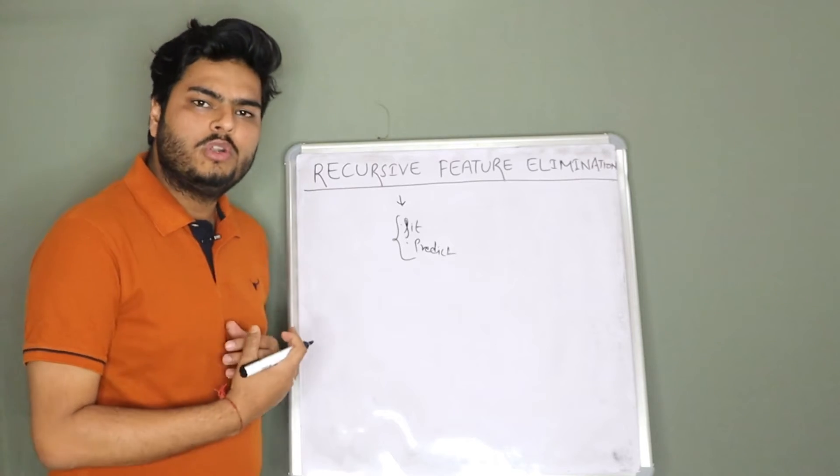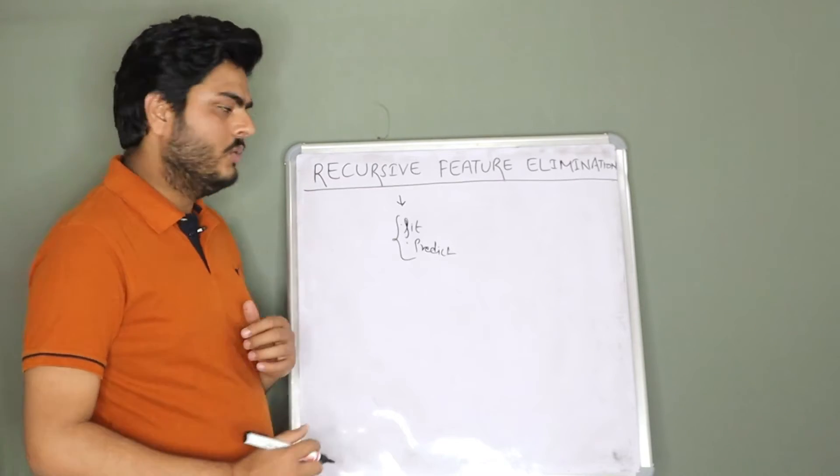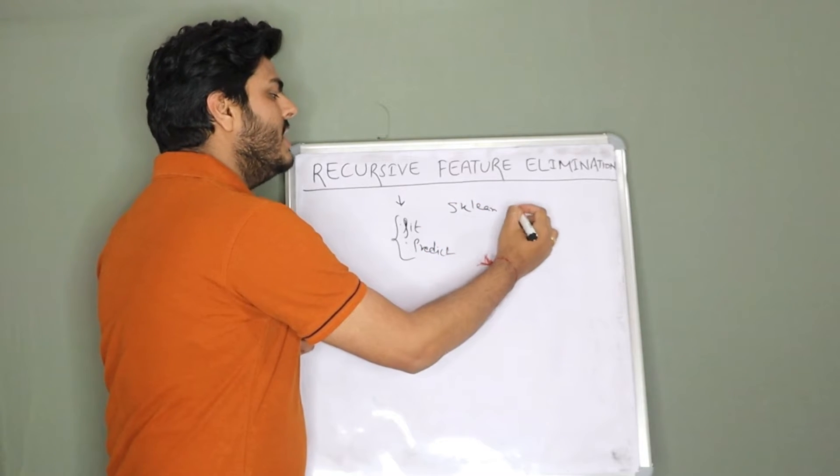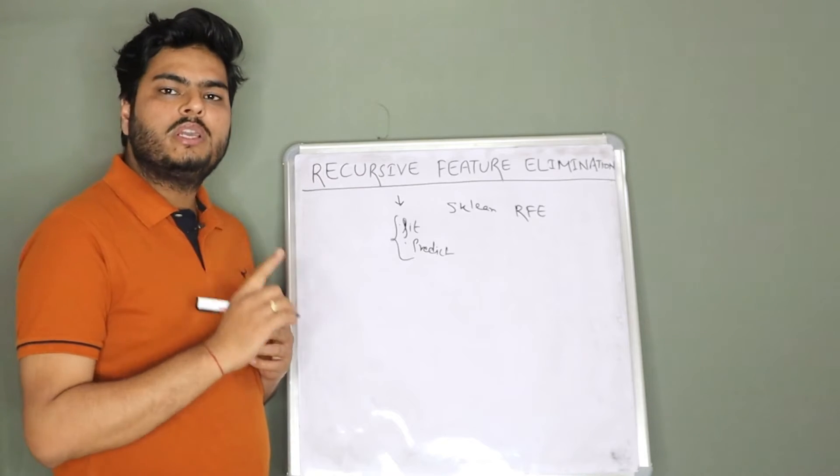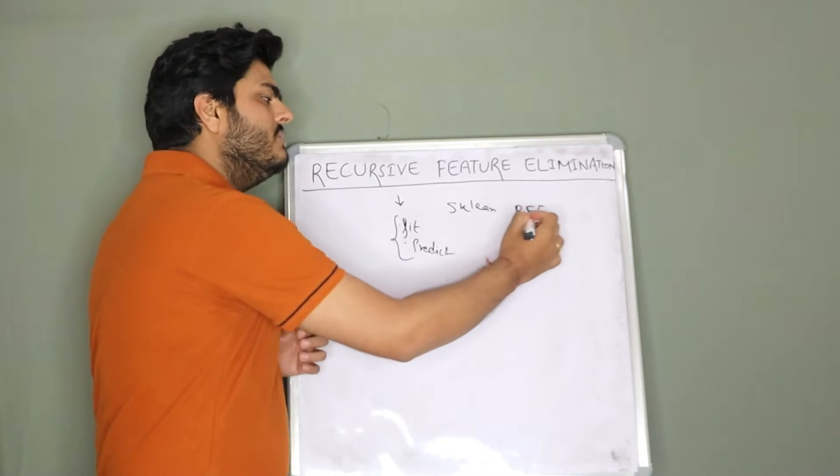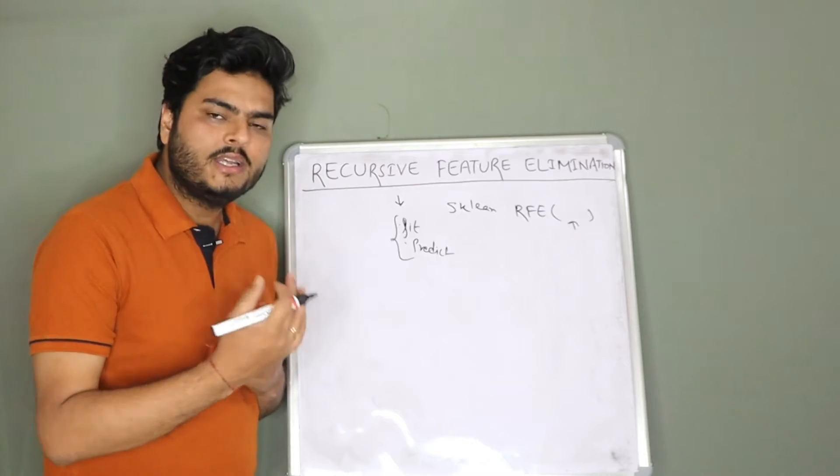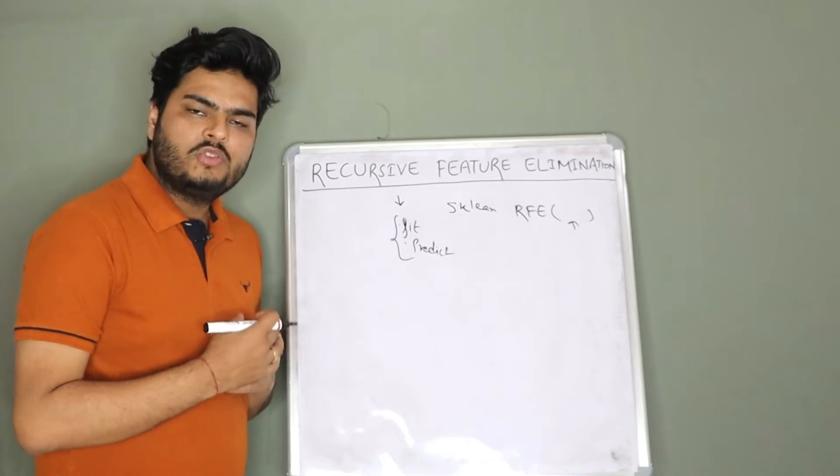If you talk from implementation point of view you just import RFE from sklearn. You go and write from sklearn give me RFE and in this RFE which stands for recursive feature elimination you give some inputs and you get the output. Before I show you that let me explain you what it does step by step.